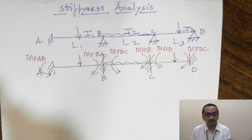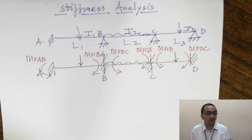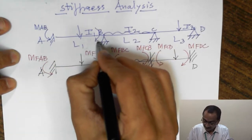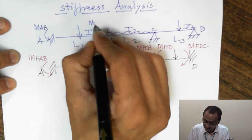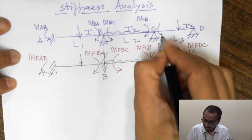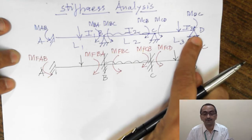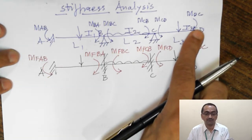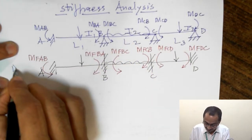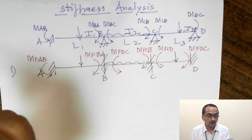Now I am interested to find out what is the final end moment at A, what is the final moment at B — that is MAB and MBA — what is MCB and MCD, and what is MDC. We can predict that MDC will be equal to zero, which will be one of the checks after our stiffness method. So I am interested to find out all these end moments. The first step is I have fixed all the ends and found out the fixed end moments.